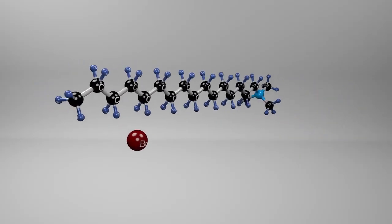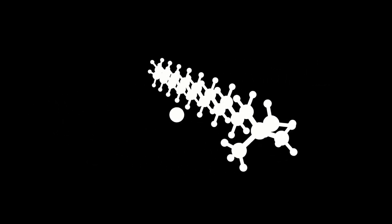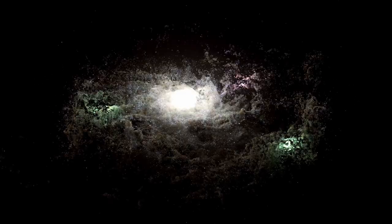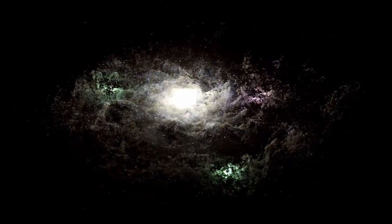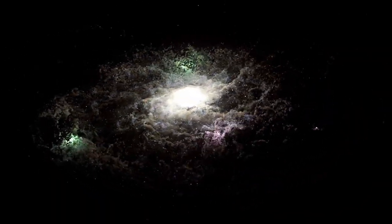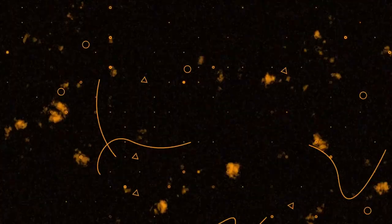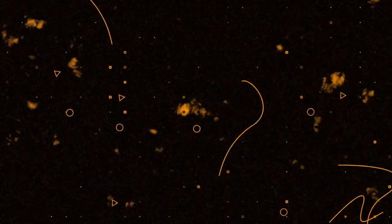But this ring was different. It was nearly flawless—a perfect circle of light so exact that the odds of it occurring naturally are vanishingly small. In physics, perfection is rare. Nature favors chaos, entropy, and imperfection. But this lens was so symmetrical, so precise, that it appeared engineered.